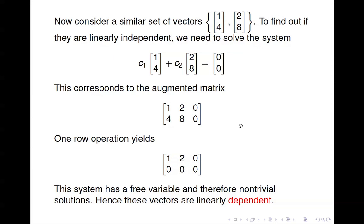Here's another set of vectors, changed just a little bit. Let's see if they're linearly independent. We take a linear combination, set it equal to zero, stick that in as an augmented matrix, do one row operation, and we end up with a matrix that has a free variable. X2, in the second column, has no pivot position, so X2 is a free variable, and therefore these vectors are linearly dependent.